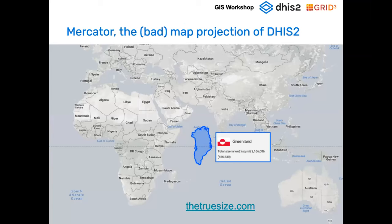In the Maps app we have been hiding an important complexity called map projections and coordinate reference systems. We only support latitude and longitude and one map projection — the Mercator projection. Many people don't like this projection for good reasons: for example, Greenland appears the same size as the whole of Africa. There is a nice website called truesize.com where you can move countries around the map and compare their real sizes.